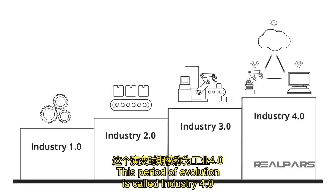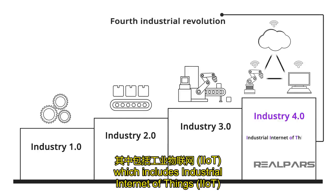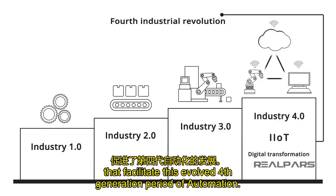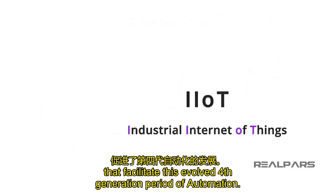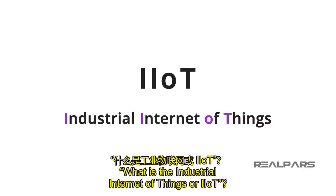This period of evolution is called Industry 4.0, or the Fourth Industrial Revolution, which includes Industrial Internet of Things, IIoT, and digital transformation mechanisms that facilitate this evolved fourth generation period of automation. In this lesson, we will learn about what is the Industrial Internet of Things, or IIoT?